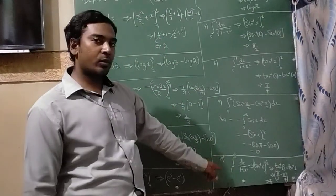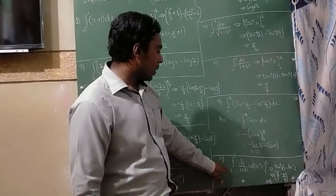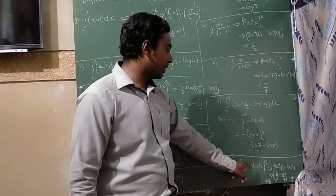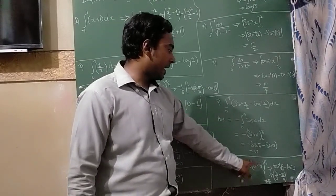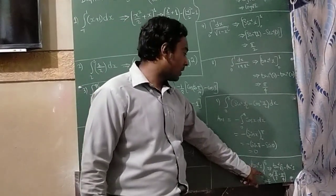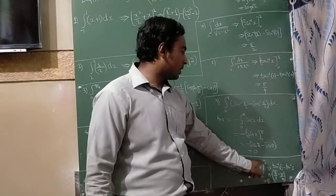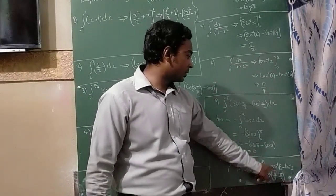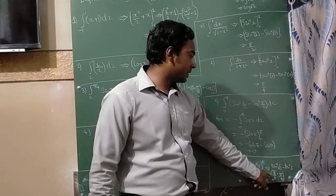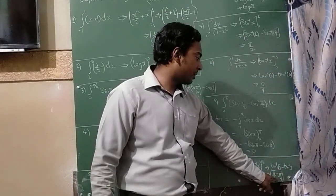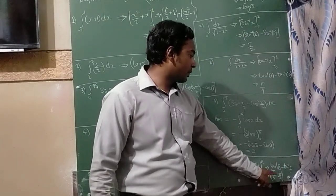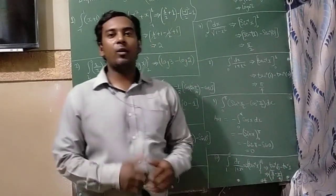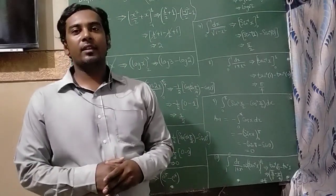The last question is integration of 1 to √3 of dx/(1 + x²), which equals tan⁻¹(x) evaluated from 1 to √3. Tan⁻¹(√3) = π/3 and tan⁻¹(1) = π/4. Solving π/3 − π/4 gives the final answer as π/12. I hope you all understood. Thank you.